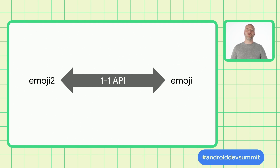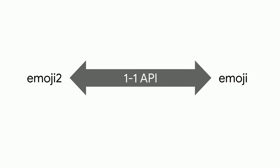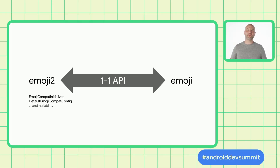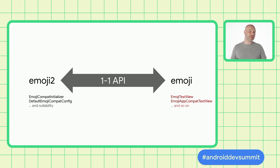Emoji2 is a new artifact that replaces AndroidX.emoji. It has pretty much the same API as AndroidX.emoji, just in a new package. We added a few new classes to it — a startup initializer and a default configuration — and while we were in there, we added nullability annotations throughout. Compared to AndroidX.emoji, we also removed a few TextView subclasses that aren't needed when using AppCompat, saving about 14 kilobytes after R8.